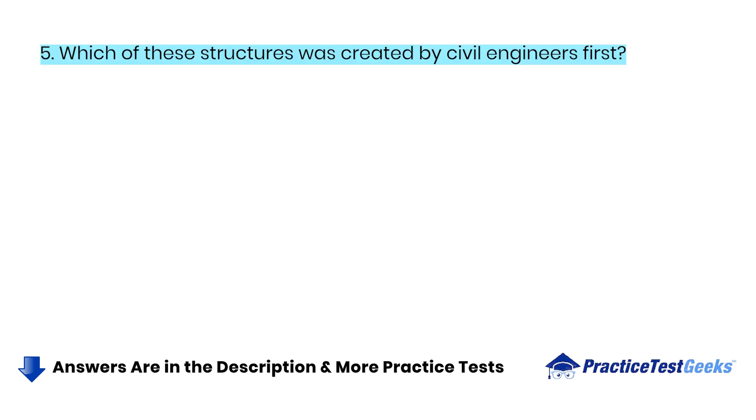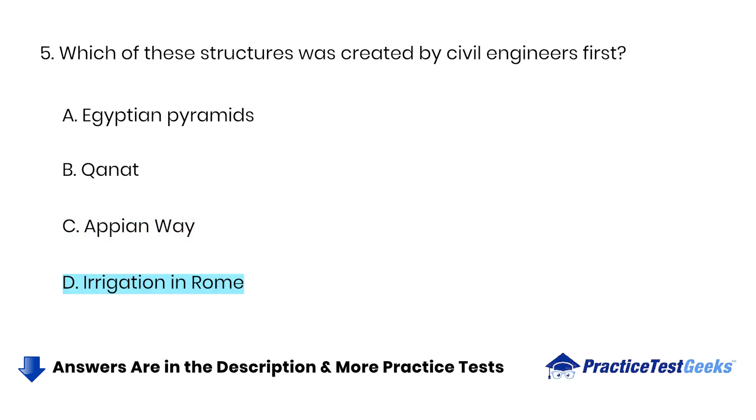Which of these structures was created by civil engineers first? A. Egyptian pyramids. B. Canet. C. Appian Way. D. Irrigation in Rome.